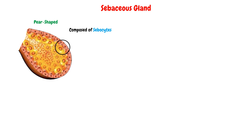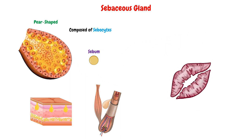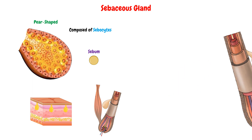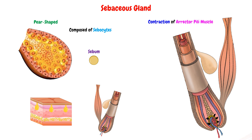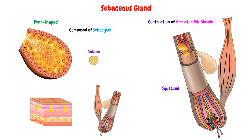These sebocytes produce sebum. The gland will secrete sebum either on the skin surface directly or on the hair shaft, depending on whether the skin contains hair or is hairless in that area. The gland secretes sebum on the hair shaft mainly by the contraction of the erector pili muscle, because the sebaceous gland is positioned between the hair follicle and this muscle. So when this muscle contracts, it will pull the hair to its side, and the gland between them will be squeezed. As a result, it secretes some of its oily material on the hair shaft.